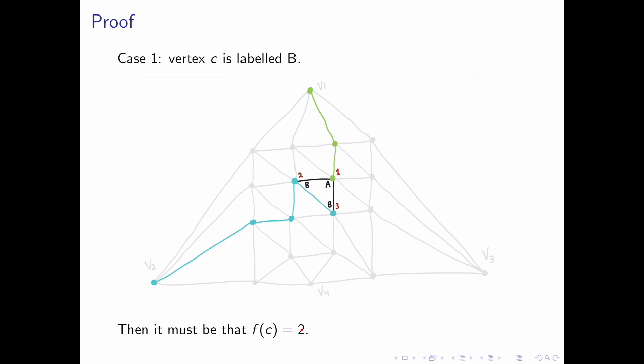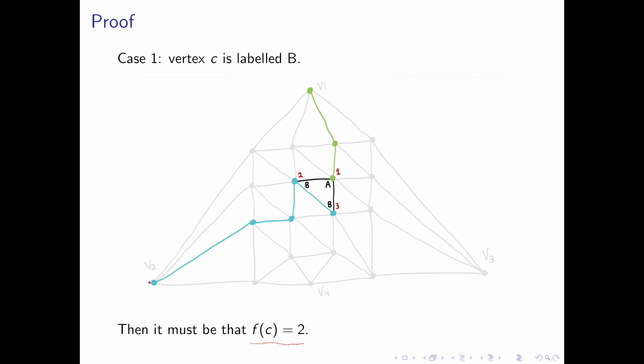And if vertex C is labeled B, we can extend the cyan path. So now we have a path from v2 to B and then we're going from B to C. Thus, f of C must equal 2 because there is a path from v2 to C with all vertices labeled B.